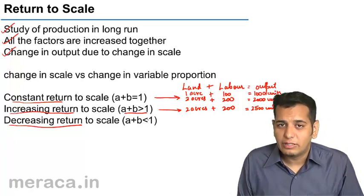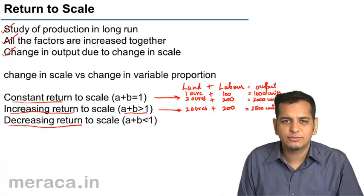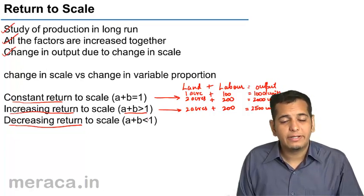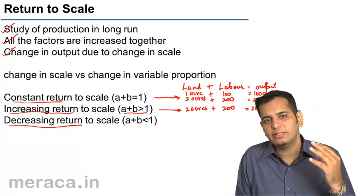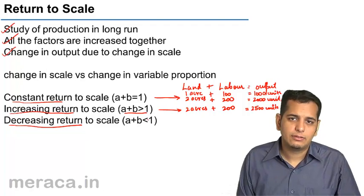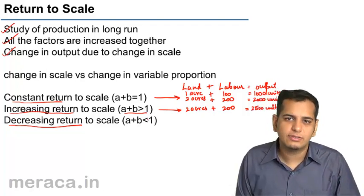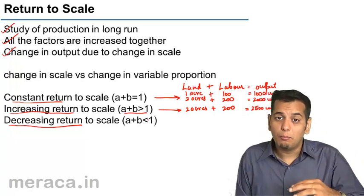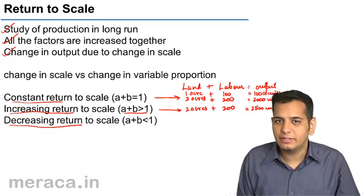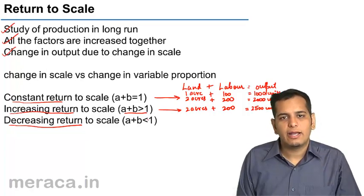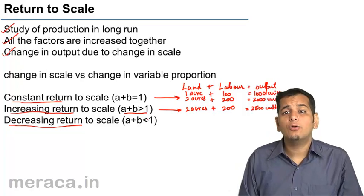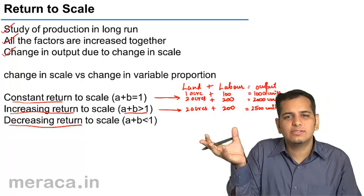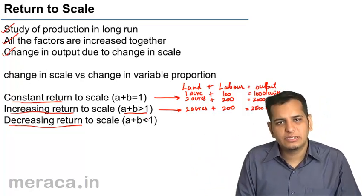Finally, we come to the law of decreasing returns to scale. In constant returns to scale, when inputs are increased, outputs also increase in proportion — we call that constant returns to scale. When outputs increase more than the increase in inputs, we call it increasing returns to scale. In decreasing returns to scale, the output does not increase as much as the increase in inputs — the percentage increase in output is less than the percentage increase in inputs.